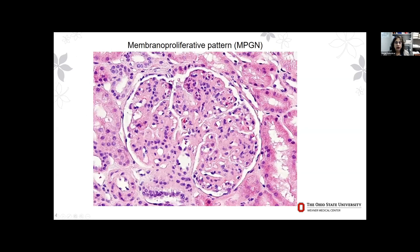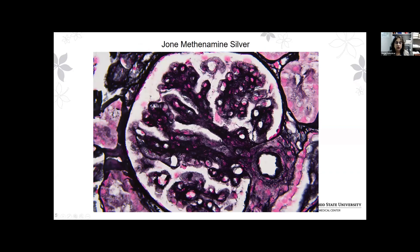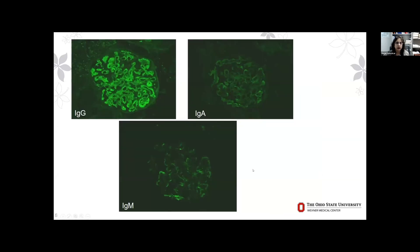The biopsy showed a membranoproliferative pattern of glomerular injury with enlargement of the glomeruli, mesangial and endocapillary hypercellularity, and nodular lobular accentuation. There were no crescents, no necrotizing lesions, no interstitial inflammation, and no interstitial fibrosis or tubular atrophy — mainly diffuse glomerular involvement. On silver stain, you can nicely see the GBM thickening; there may even be a few spikes associated with membranous change. As Dr. Sethi described, repeated episodes of injury and healing cause the GBM to thicken, showing duplication and remodeling, which we will see better on electron microscopy.